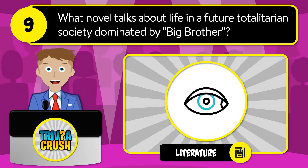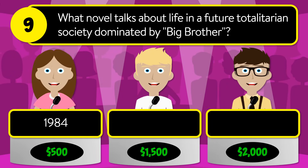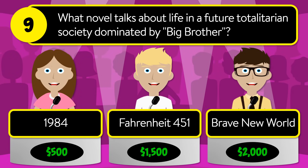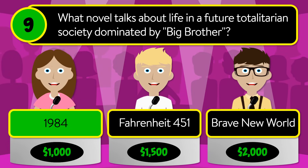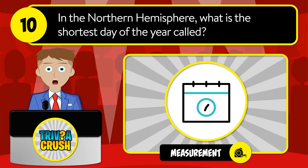Question number nine: what novel talks about life in a future totalitarian society dominated by Big Brother? Is it 1984, Fahrenheit 451, or Brave New World? The correct answer is 1984.